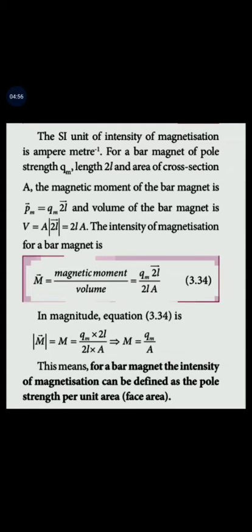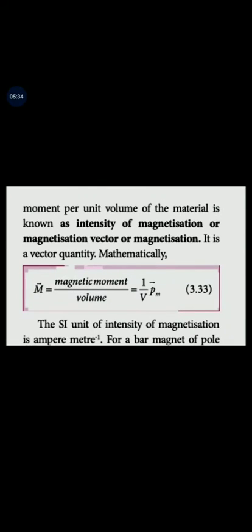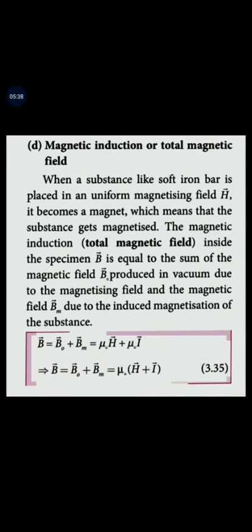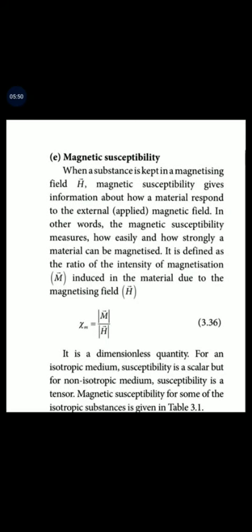This gives the definition related to the bar magnet and magnetic induction. The total magnetic field equation is: B-vector equals B₀-vector plus Bm-vector, which equals μ₀H-vector plus μ₀M-vector. So B = μ₀H + μ₀M. This is the total magnetic field equation.